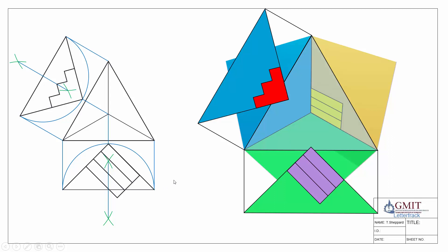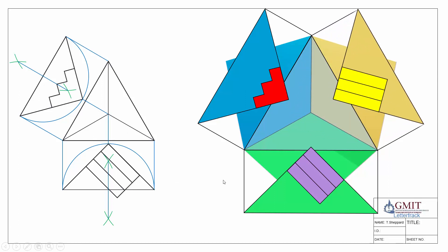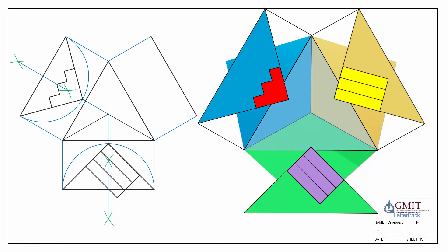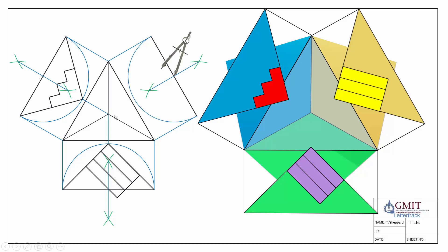We repeat the same process for the end view, though we don't actually need it — two views are enough to give us length, breadth, and height. Generally we choose the two views that give the best representation of the object; the front elevation and plan view work best here. The end view is added just for demonstration. You can see they all line up: looking in from one direction gives the front elevation, from above gives the plan, and from the side gives the end view.